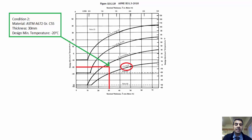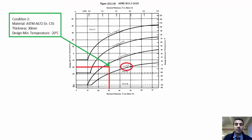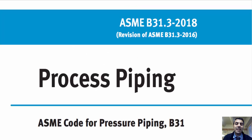By using curve D, there is no need for impact testing in Condition 2 with material A672 Grade C55, thickness 30 millimeters, and design minimum temperature minus 20 degrees Celsius. As discussed in previous sessions, 'may' indicates a provision that is neither required nor prohibited. So if you face Condition 2, you can exempt impact testing and reduce the cost of the project.